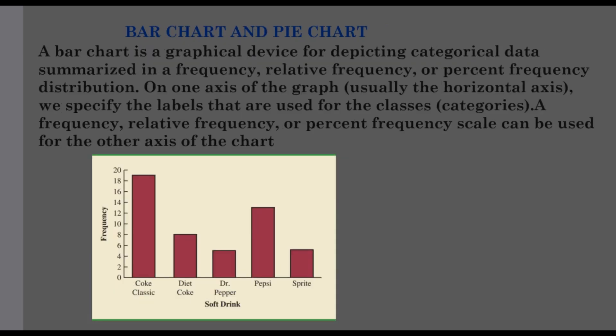In that data set, if we look at the tabular or graphical formula, we represent the data. If we look at the frequency distribution, we represent the categorical data. This format includes the bar chart and pie chart. A bar chart is a graphical device for depicting categorical data summarized in the frequency, relative frequency, or percent frequency distribution.